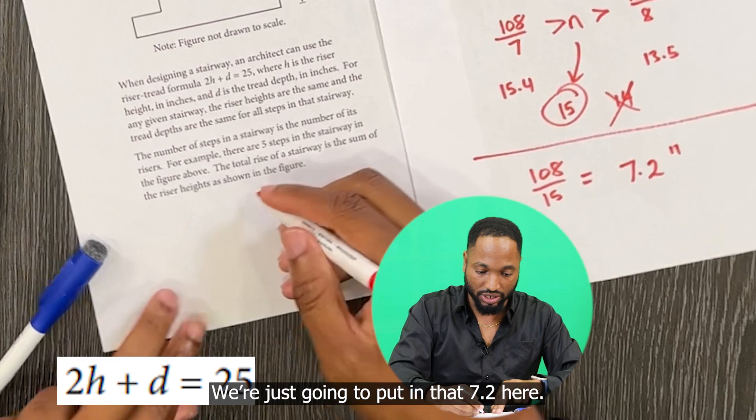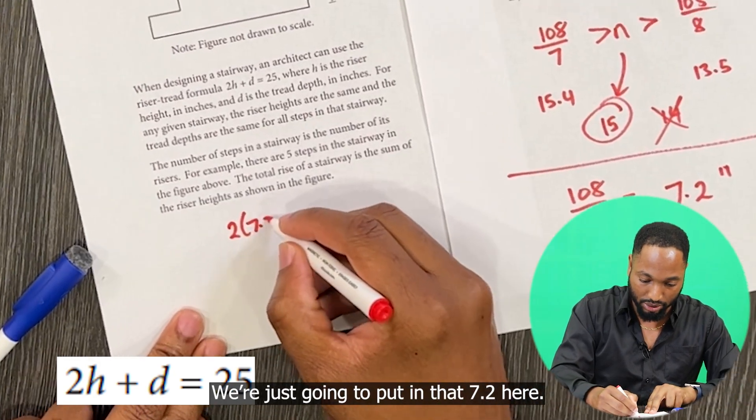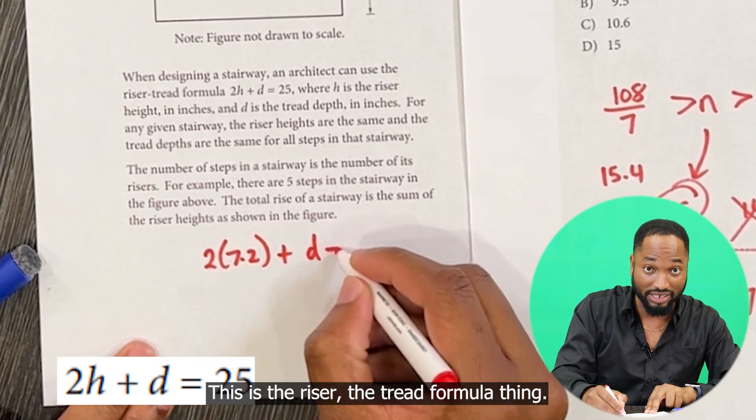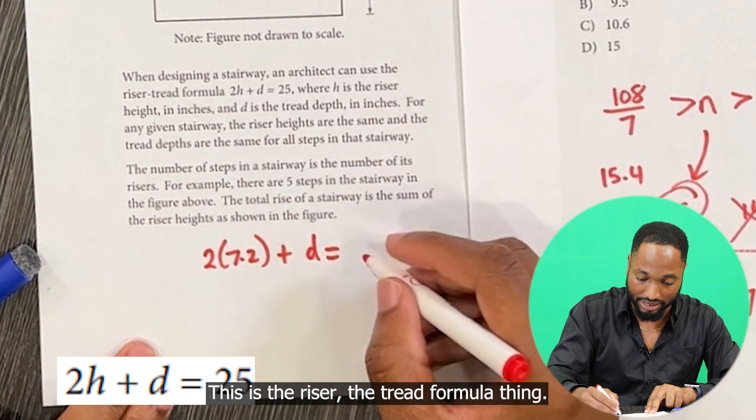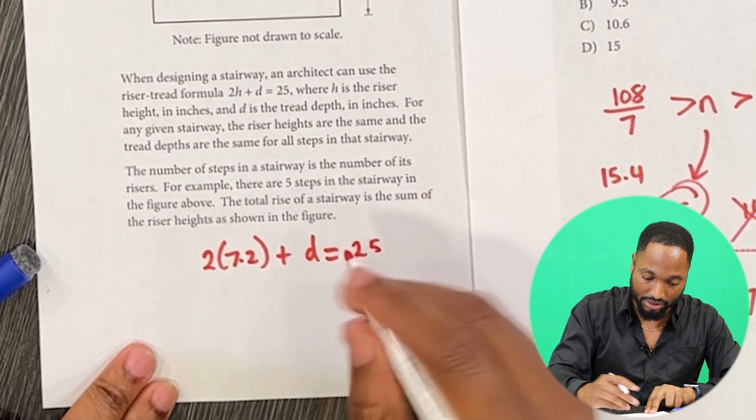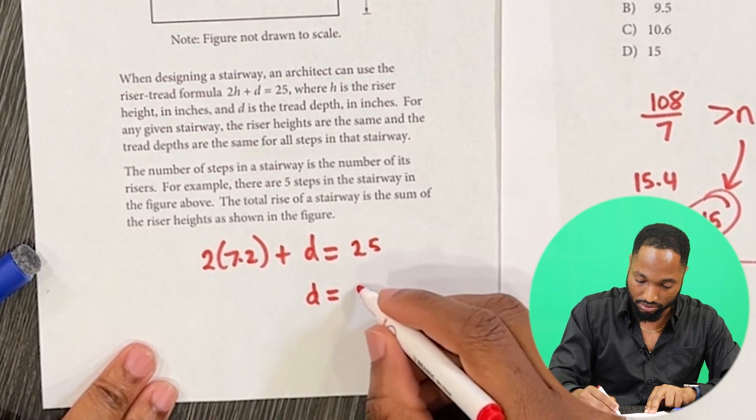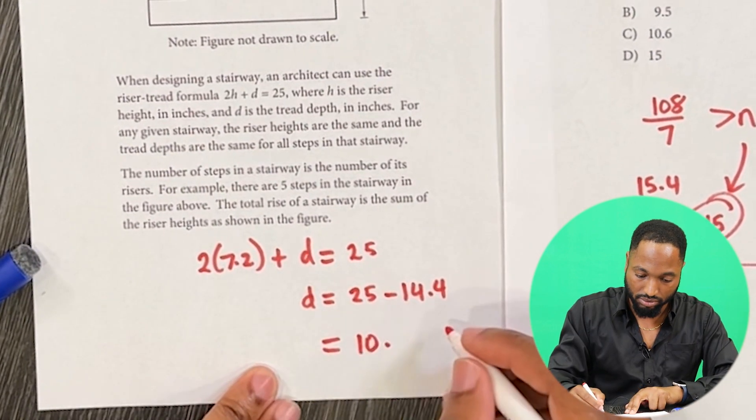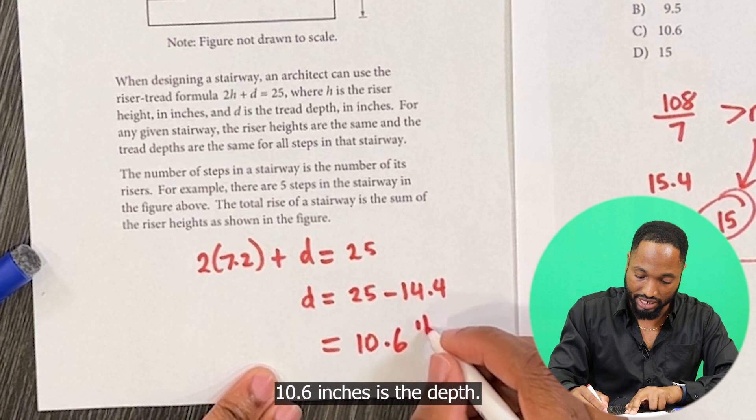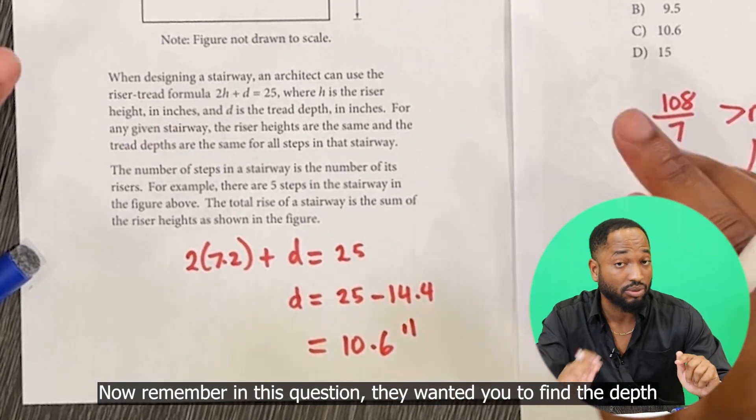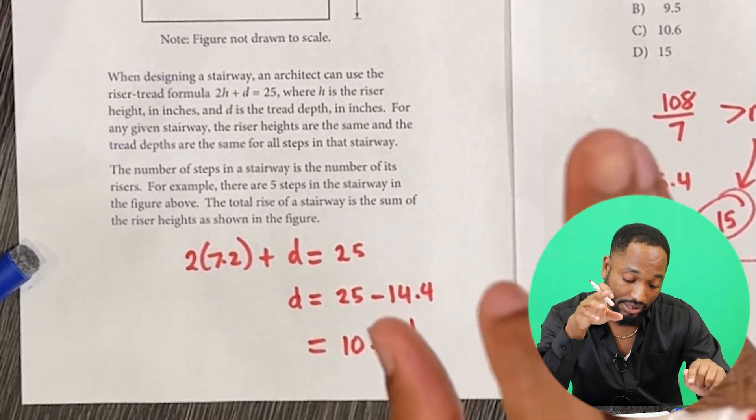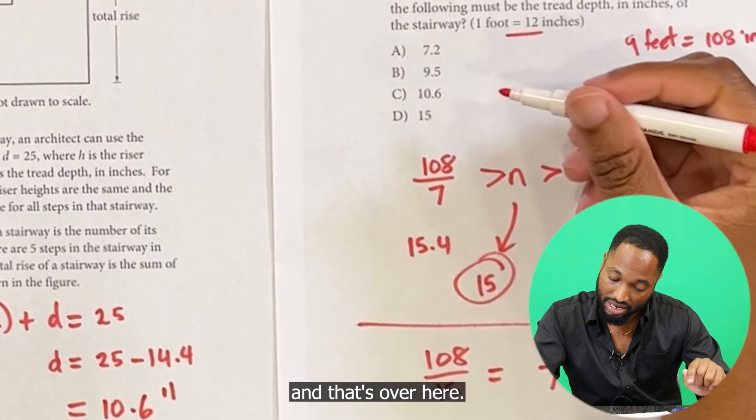We're just going to put in that 7.2 here. This is the riser tread formula, the riser tread formula. 2 by 7.2 is 14.4. 10.6 inches is the depth.